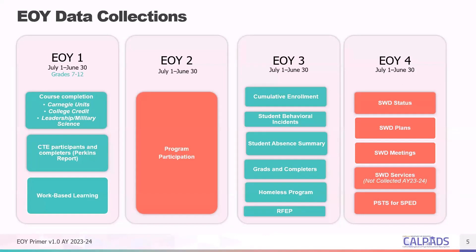EOY 4 contains information on students with disabilities, including statuses, plans, meetings, services, and post-secondary statuses for students with disabilities. These are reported in Meet, Plan, Serve, SWIDS, and PSTS files, though the Serve file will not be collected in the 23-24 academic year.